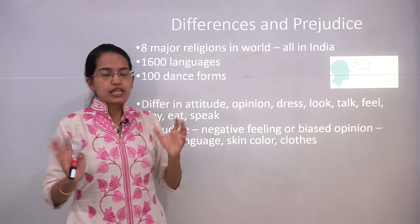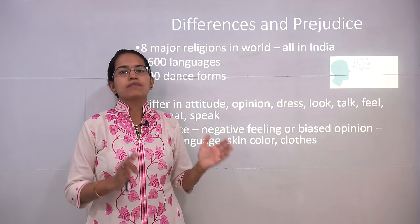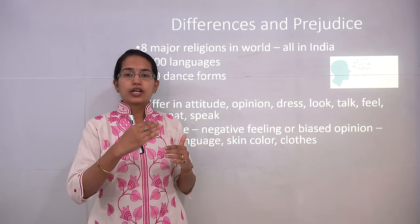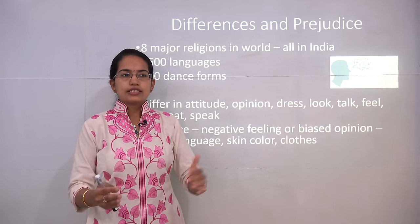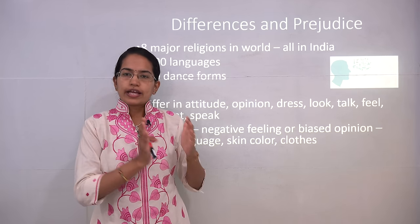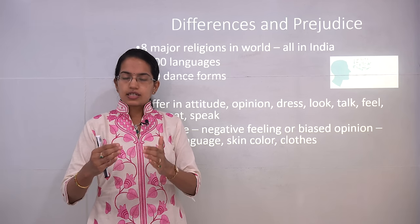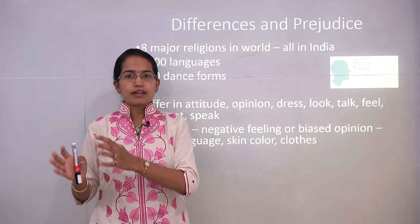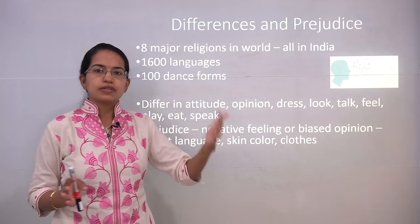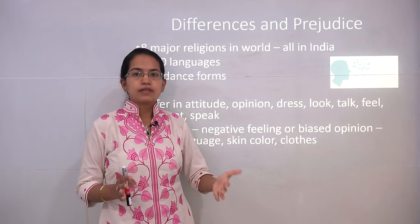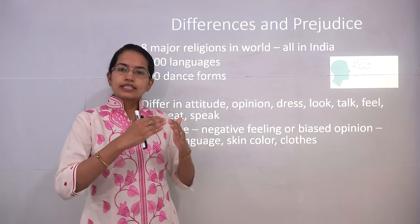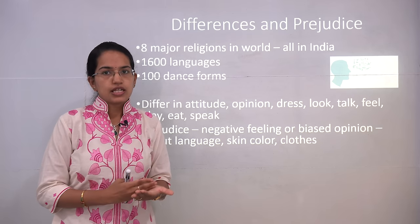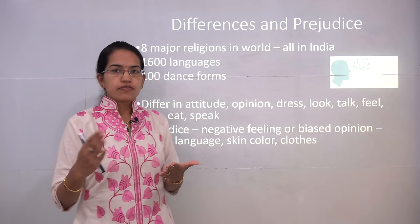There are 2 terms that we must be very clear about — one is prejudice and the other is stereotype. Prejudice involves a kind of bias behavior or a negative feeling associated with something. For example, a person who cannot speak English could be considered as inferior, despite the fact that that person may know much more than a person who can speak English. Prejudice can also exist based on skin color or clothing.